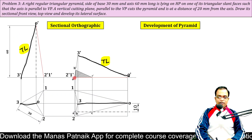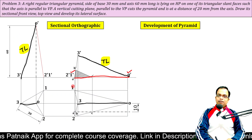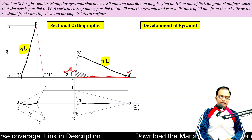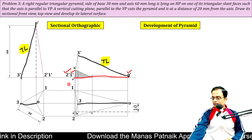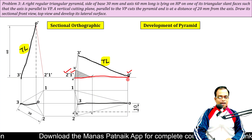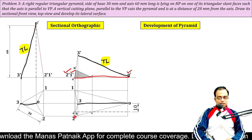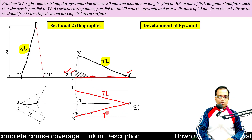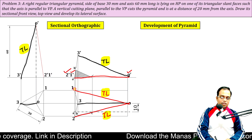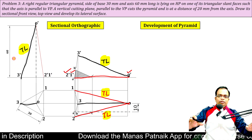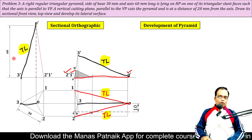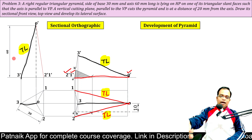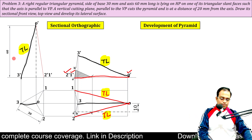Looking carefully at the front view, O'-1' is parallel to XY — in fact it overlaps XY, so it is parallel. O'-2' is also parallel to XY. If a slant edge is parallel, then its corresponding top view length — O2 or O1 — also qualifies as true length. All of these true lengths would be exactly the same, so their arcs will have equal radii.